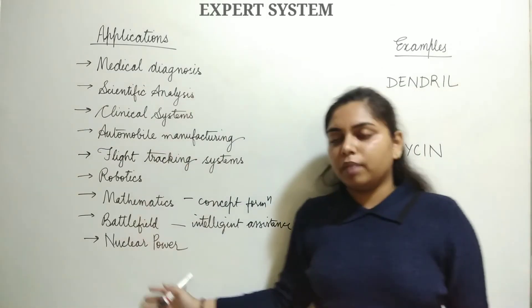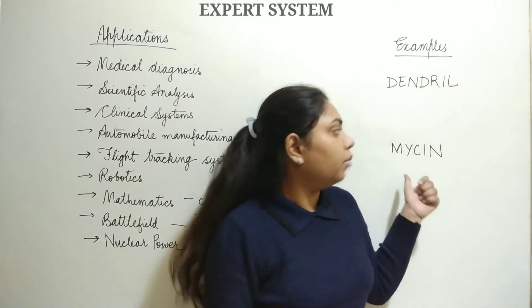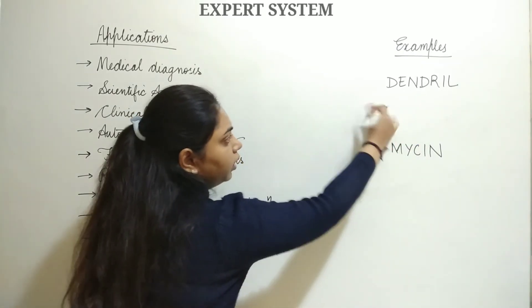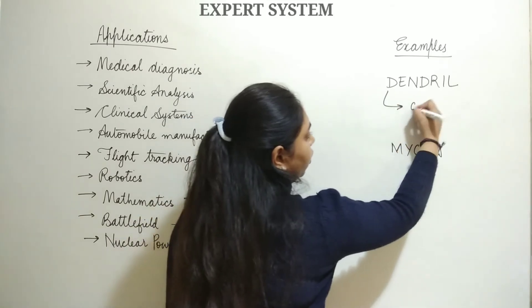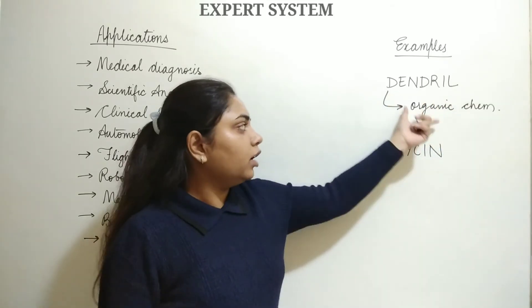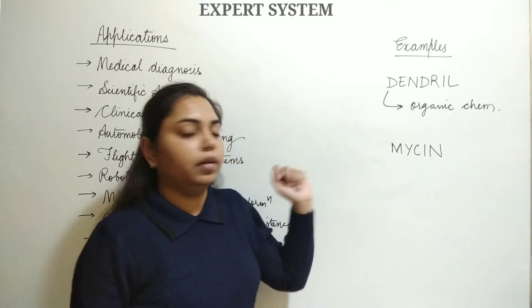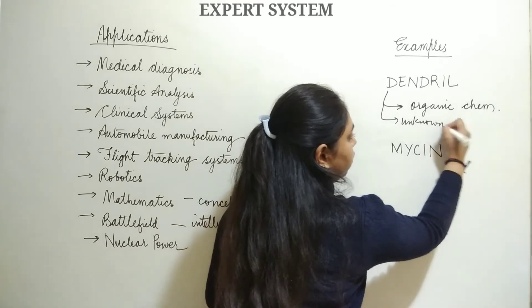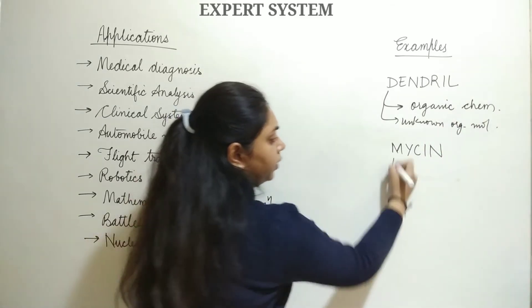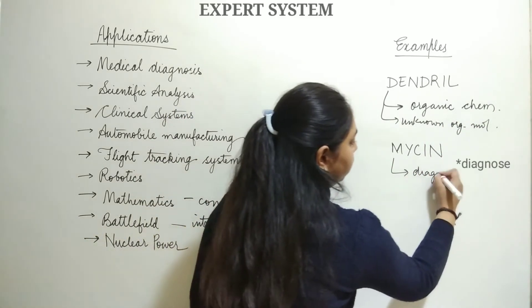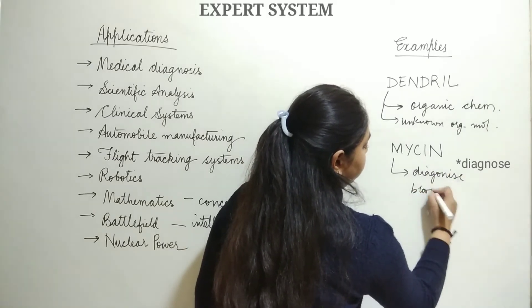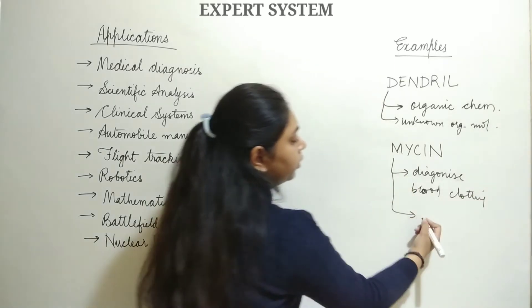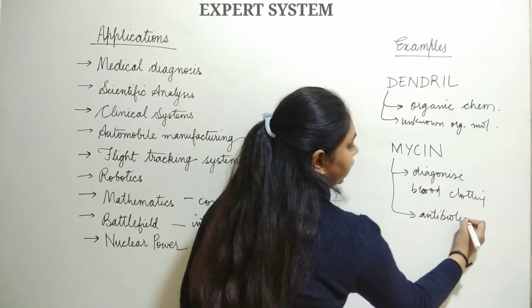Two classic examples are DENDRAL and MYCIN. DENDRAL is used in organic chemistry — it is a chemical analysis expert system used to detect unknown organic molecules. MYCIN is used to diagnose blood clotting diseases and to recommend appropriate antibiotics.